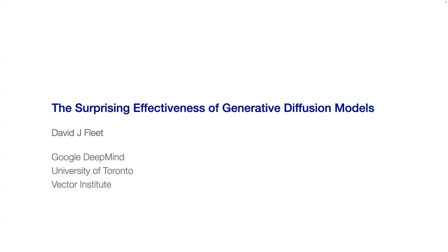One thing important to note at that time is that the concept that you could use a generative model to generate a high-resolution image that looked like anything reasonable was far-fetched. We didn't even think that was a goal because the results just were not there. Everything changed about 10 years ago with the emergence of variational autoencoders, deep autoregressive models for generating images, and generative adversarial networks.